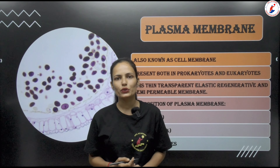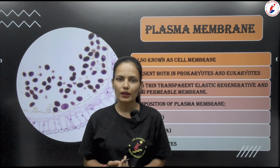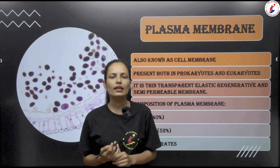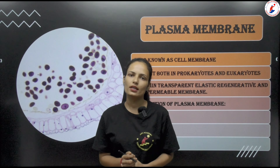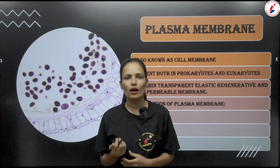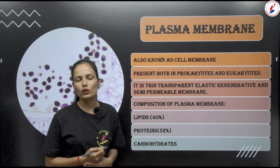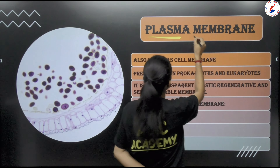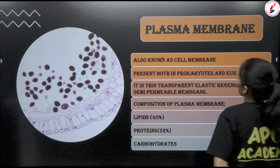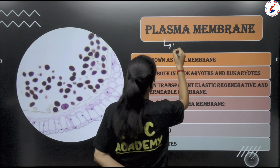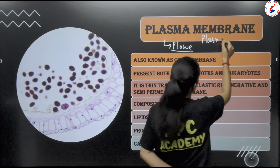Hello everyone, welcome back to our YouTube channel APC Academy. In today's video we will talk about plasma membrane. In the last video we discussed cell envelope, cell wall, and outer covering present in some eukaryotic cells like plant cell and fungal cell. Now we will talk about plasma membrane, which is an absolute requirement of the cell. This term was given by Pfeffer, and plasma membrane is also known as plasmalemma.